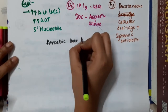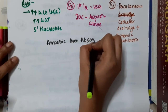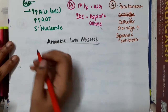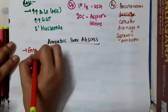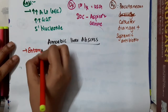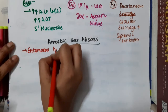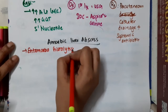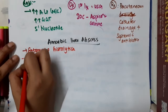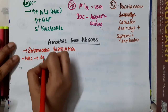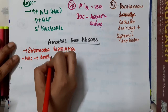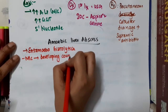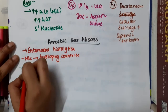Amoebic liver abscess is mainly caused by Entamoeba histolytica, and it is most commonly seen in developing countries.